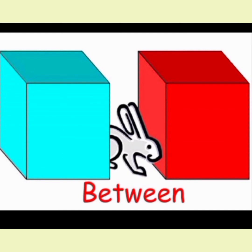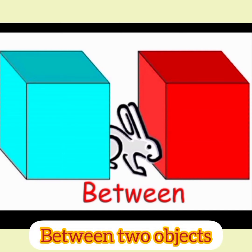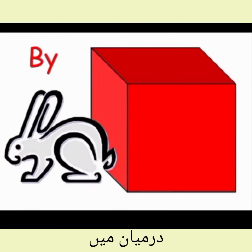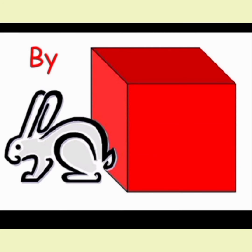First of all: between. The rabbit is between the boxes. Between is used for two things. Next: by. The rabbit is sitting by the box — kharkosh box ke paas betha hoa hai, box ke saat betha hoa hai. We use 'by' as a preposition.